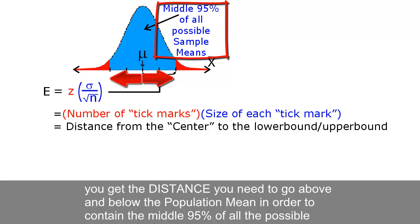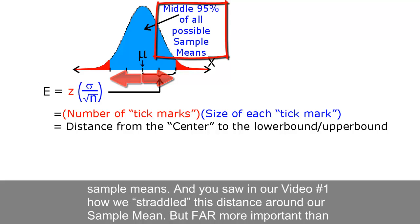you get the distance you need to go above and below the population mean in order to contain the middle 95% of all the possible sample means. And you saw in our video number 1 how we straddled this distance around our sample mean.